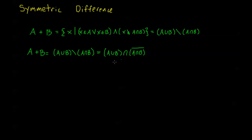By DeMorgan's laws I can distribute this complement. This becomes A union B intersected with — and remember, when we distribute a complement through an intersection each set becomes a complement of itself but the intersection changes into a union. If you don't remember this, you can go back and review the properties of set operations; this one was called DeMorgan's law. So it's going to be A complement union B complement.